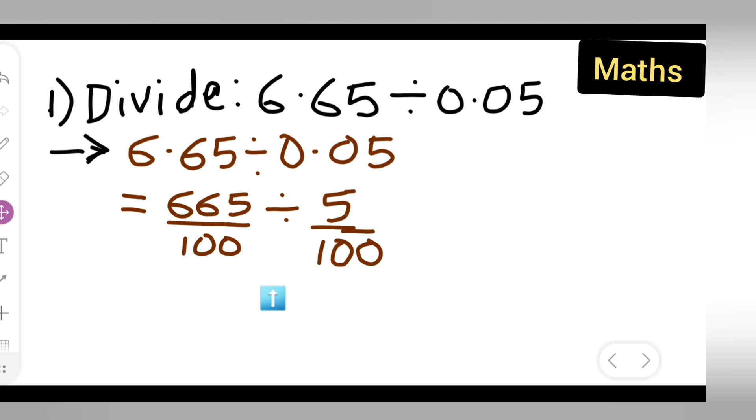So you write this as it is, then take the reciprocal of this. Multiply by the reciprocal of this. For example, 665 upon 100 multiplied by reciprocal of 5 upon 100. So it will be 100 upon 5.